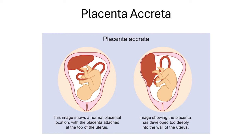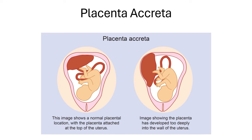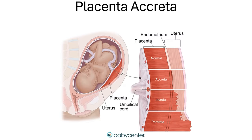As a bonus topic, let's discuss placenta accreta. In a normal pregnancy the placenta is nicely attached to the uterine wall. In placenta accreta, the placenta goes too deeply into the uterine wall. Depending on how deeply it invades, it can be termed accreta, increta, or percreta — with percreta representing the deepest invasion.